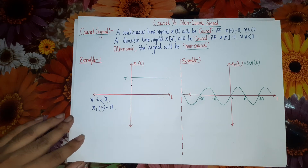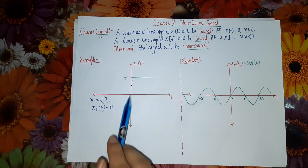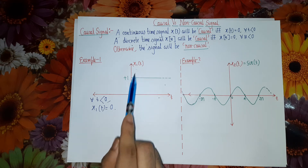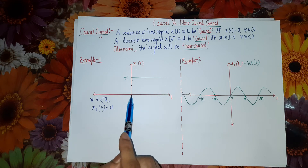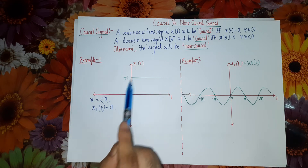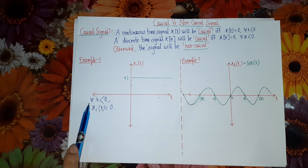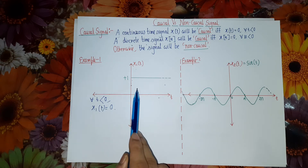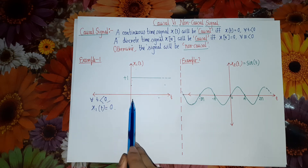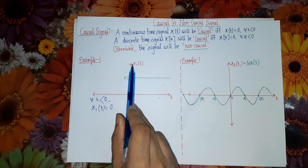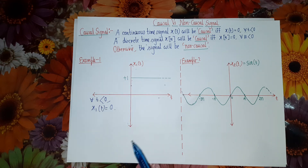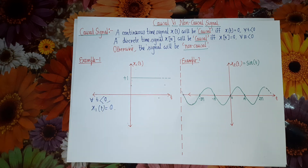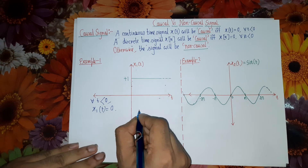This concept will be more clear when you solve these two examples. Look at example one. The signal x1(t) waveform is drawn with respect to time t. You observe that x1(t) is equal to a constant value 1 for t greater than 0, and for t less than 0, x1(t) is 0. The complete waveform of x1(t) is lying in the positive time axis, and no portion lies in the negative time axis. Hence, clearly this signal is a causal signal.